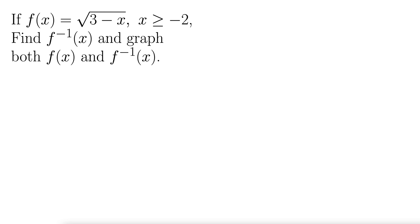This example gives us f of x equals the square root of 3 minus x and restricts our domain to x greater than or equal to negative 2. We want to find the inverse of that function and then graph both the function and its inverse on the same set of axes.